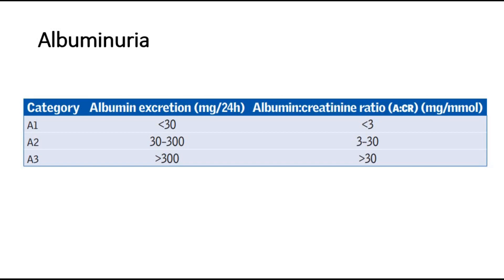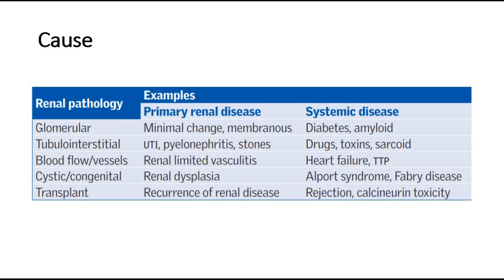A3 is the most severe and A1 is less severe. The third classification of CKD is based on the underlying disease. It can be divided into primary renal disease or systemic disease. The most common causes of CKD are diabetes, which accounts for 24% of cases, glomerulonephritis at around 13%, and hypertension or renal vascular disease.